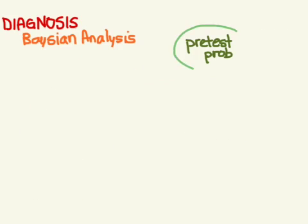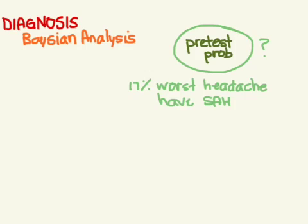So how do you figure out what this pre-test probability is? You might find it in the literature, like there might be something that says 17% of all patients who present with the worst headache of their life have a subarachnoid bleed. So if someone comes in with the worst headache, you say, my pre-test probability is 17%. Or maybe you find another one that said of patients who come in with syncope, 25% of them have a cardiac cause.